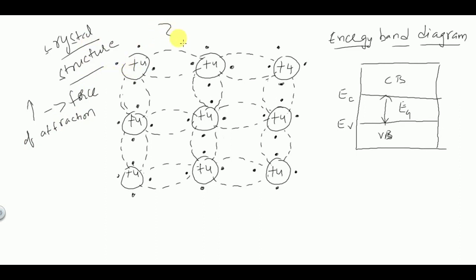When an external force is applied on this semiconductor, the valence electrons which are lightly bonded to the nucleus will acquire some energy and come out of the bonding, becoming free electrons. Since covalent bonds are weaker bonds involving sharing of electrons, the valence electrons can become free very easily and are ready for current conduction. This phenomenon seen in the crystal structure can also be explained using the energy band diagram.